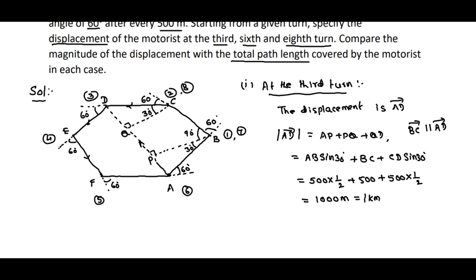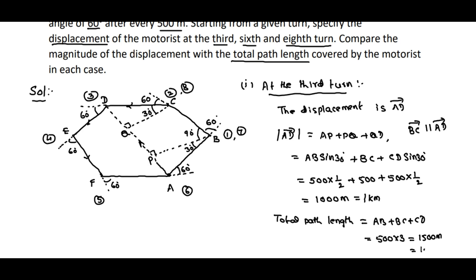Coming to the distance, or total path length: the total path length equals AB + BC + CD, which is 3 times 500, or 500 × 3 = 1500 meters, that is 1.5 kilometers. So this is for turn 3.